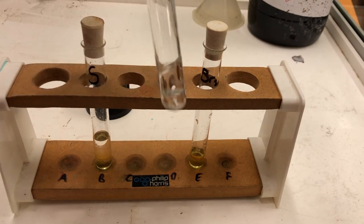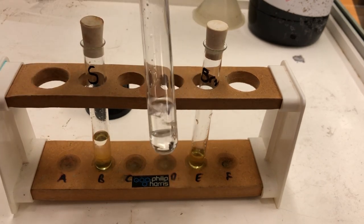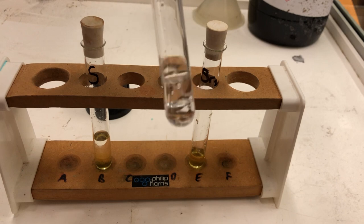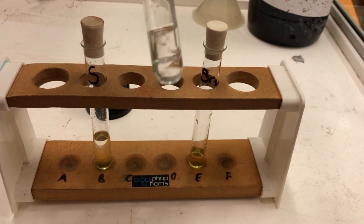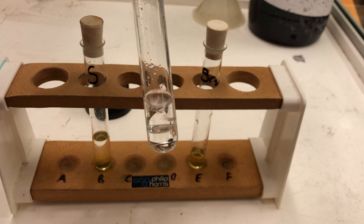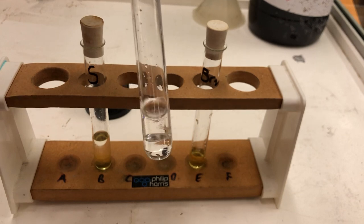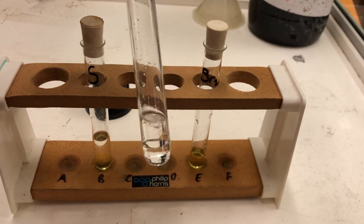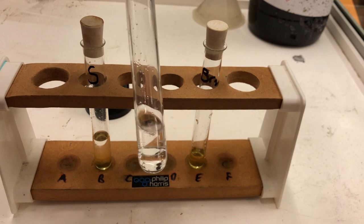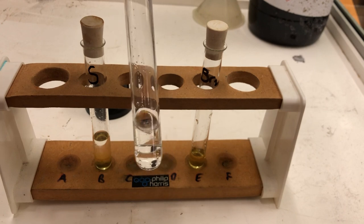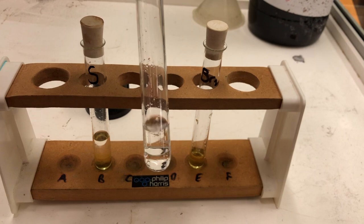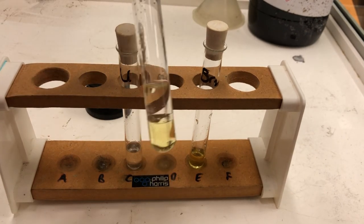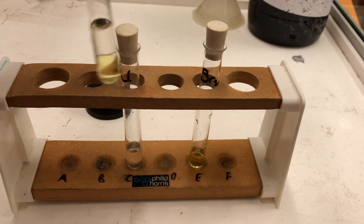However, when bromine is added to an unsaturated hydrocarbon such as hexene, again the bromine water is lying at the bottom here. You can see the two layers, and the bromine water has decolorized. It has lost its yellow color and it is now clear and colorless. Bromine reacts with unsaturated hydrocarbons such as hexene but does not react with saturated hydrocarbons such as hexane.